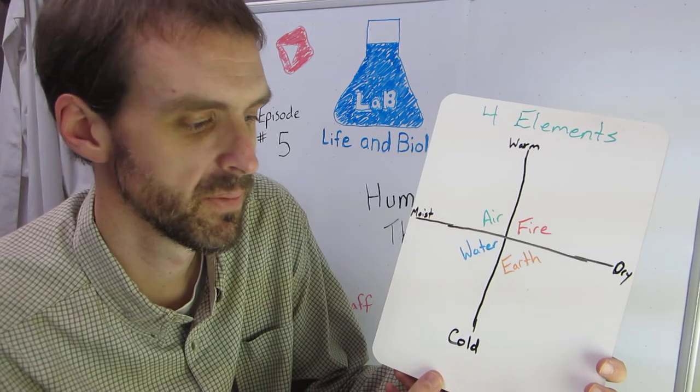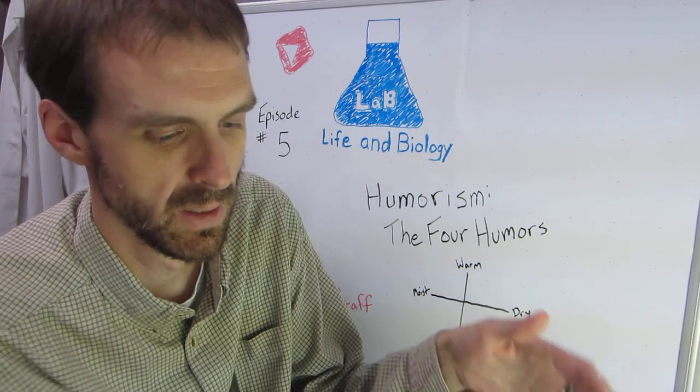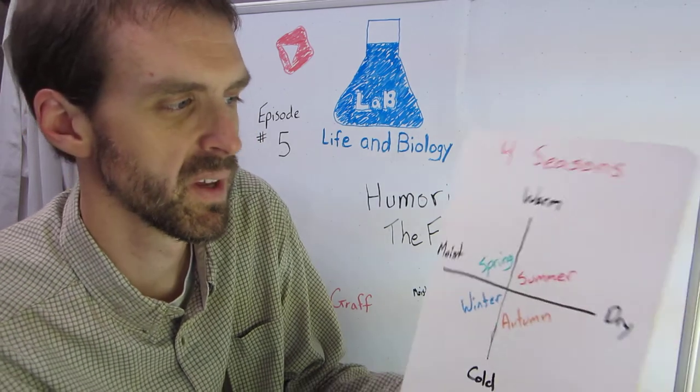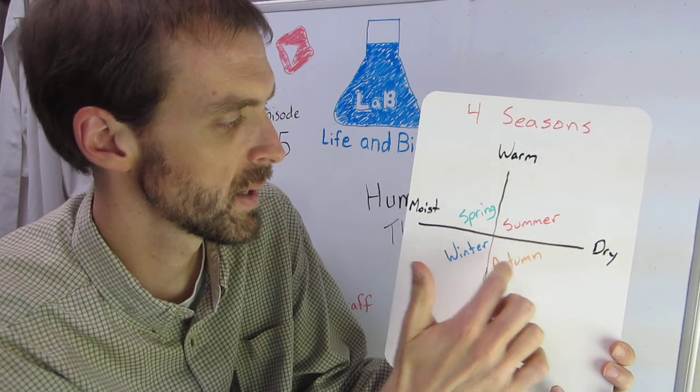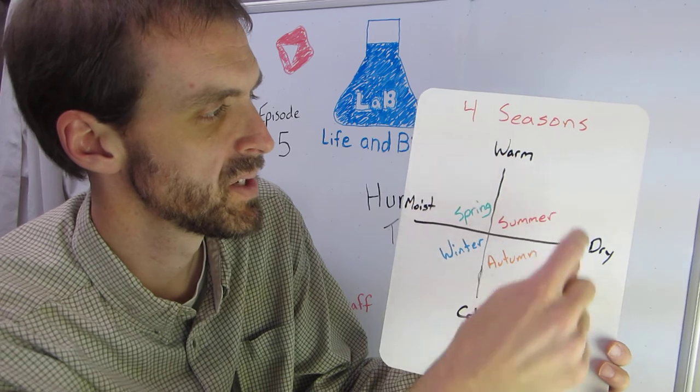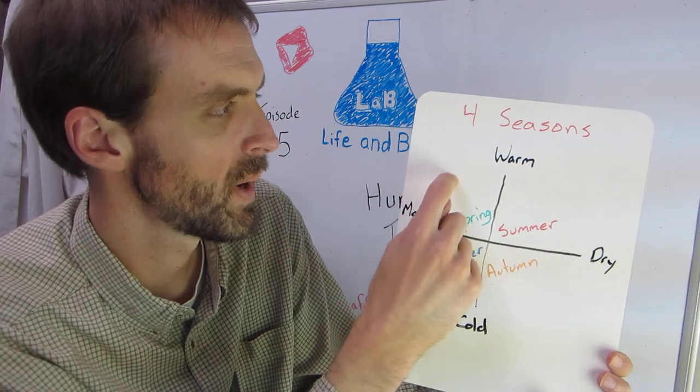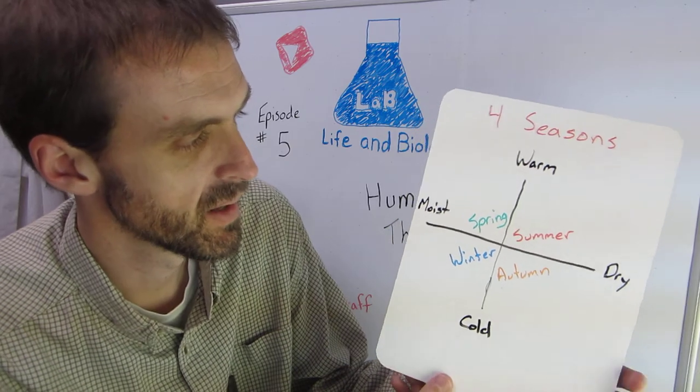This sort of concept of four can be applied to other things as well. Something that can easily come to mind is the seasons. You have spring, summer, autumn, and winter for your four seasons that would fit into each of these quadrants that have these characteristics.